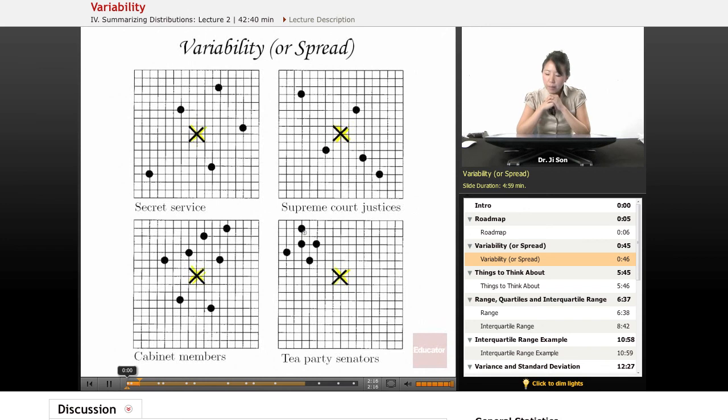Well, there's a couple of ways you might want to think about it. One way might be to just look at the farthest person away from the president in each of these sets.